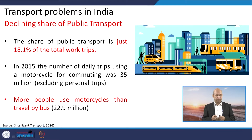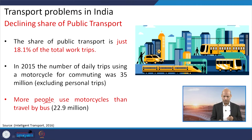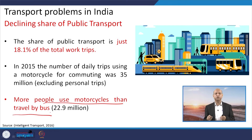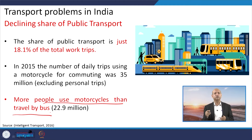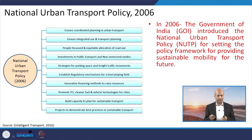Looking at the declining share of public transport compared to privately owned vehicles, more people now use motorcycles than travel by bus — around 22.9 million people. The scenario clearly shows that public transportation is being used by fewer people while more people are using their own privately owned vehicles.